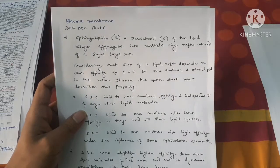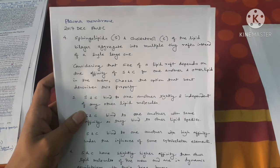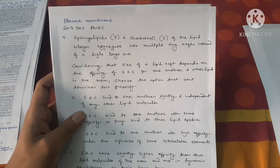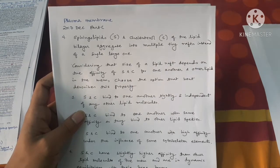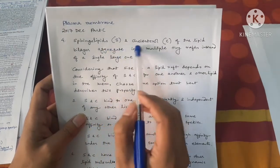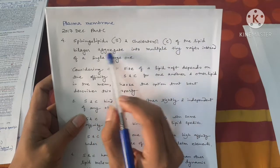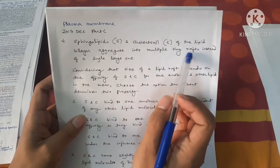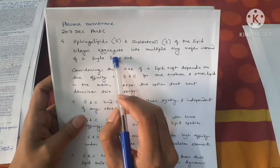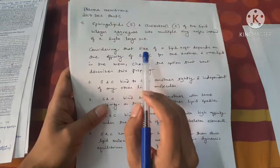Now let's talk about another question on the plasma membrane topic from CSIR UGC NET Life Science — this one is from 2017 December. The question is: sphingolipids and cholesterol of the lipid bilayer aggregate into multiple tiny rafts — lipid rafts — instead of a single large one.